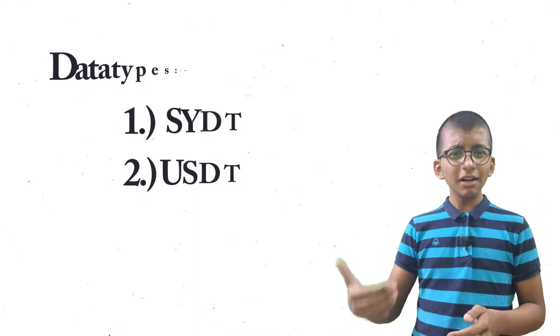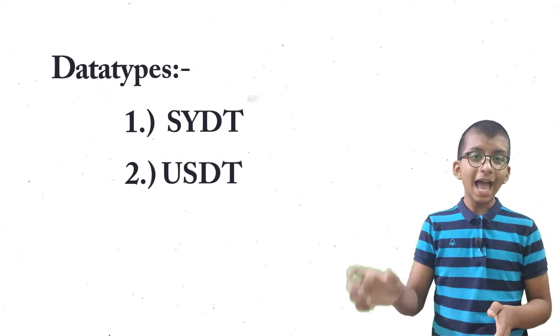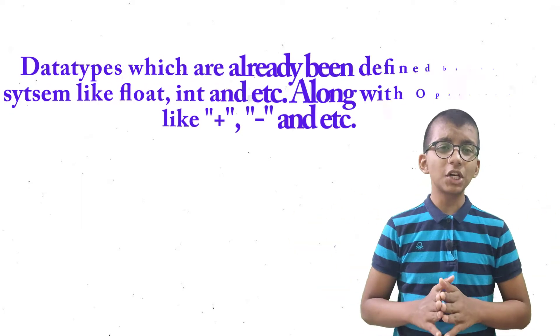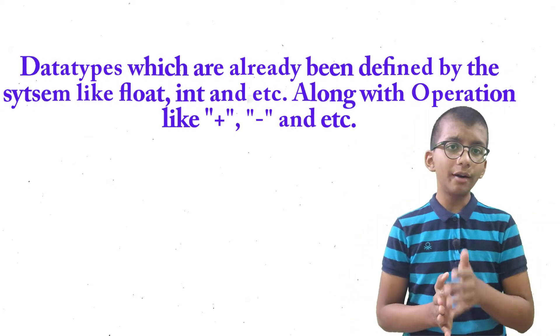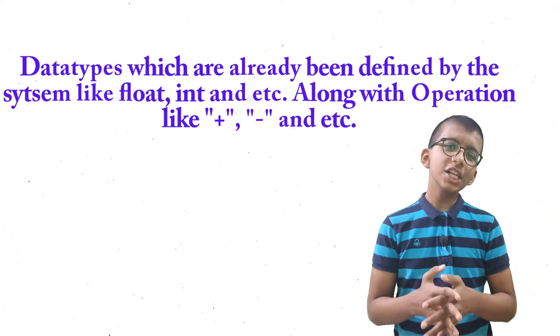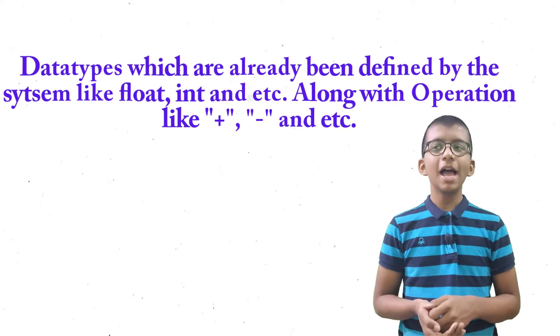So let's talk about data types. There are two types of data types: user-defined data types and system-defined data types. First, let's talk about system-defined data types. What are system-defined data types? The data types which are already defined by a particular programming language or system — like integers, floating point numbers, boolean values, and so on.